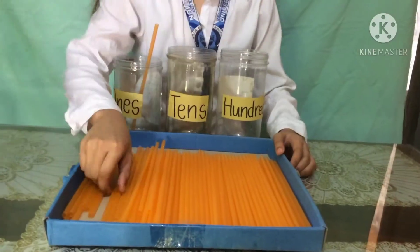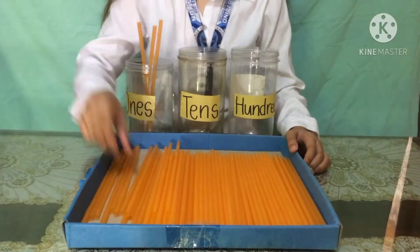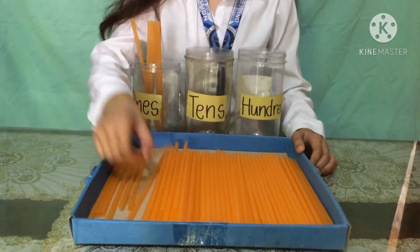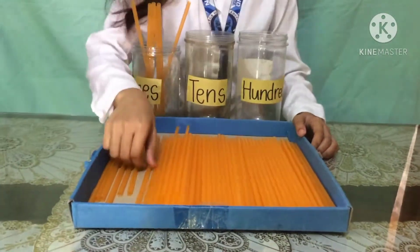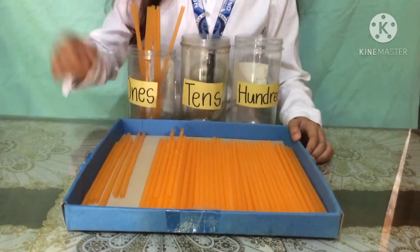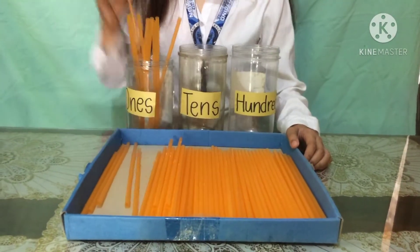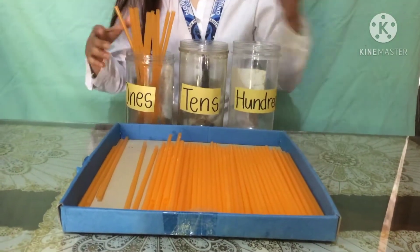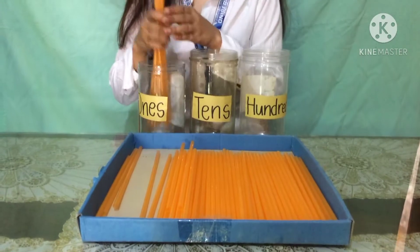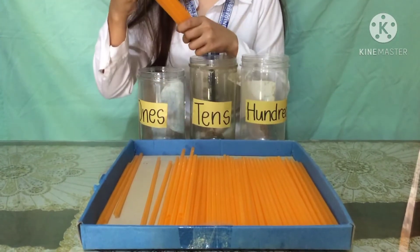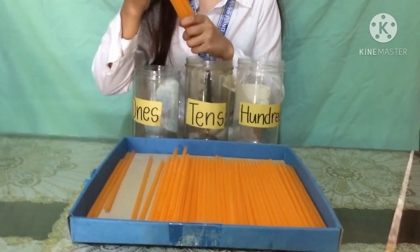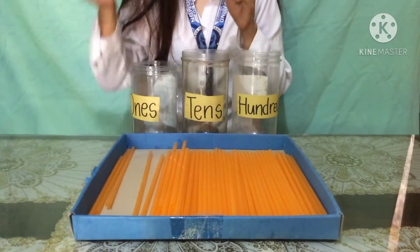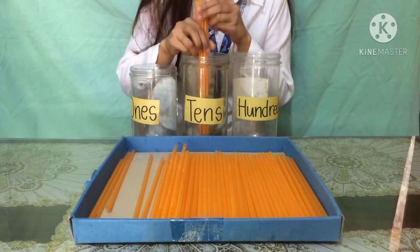1, 2, 3, 4, 5, 6, 7, 8, 9, 10. I'm gonna put these 10 straws in one bundle since we have a bundle of 10 straws. I'm now gonna move it to the tens place.